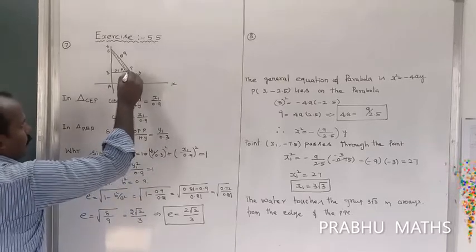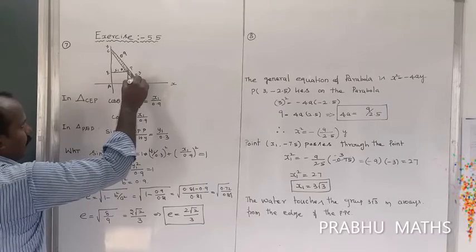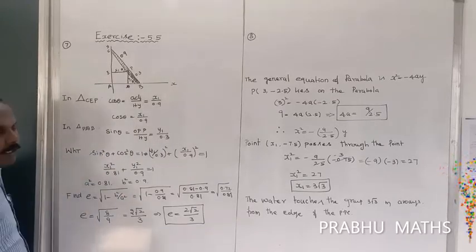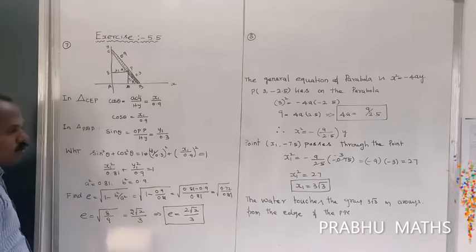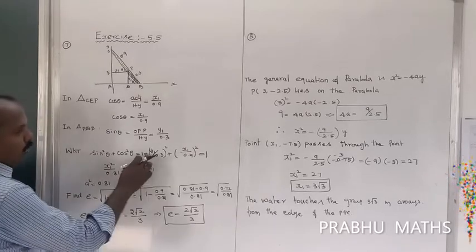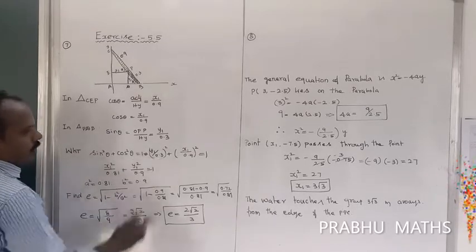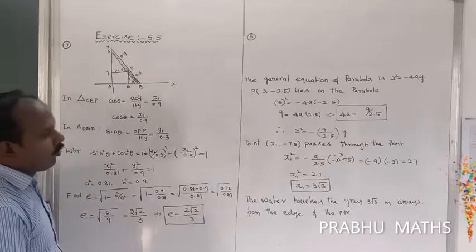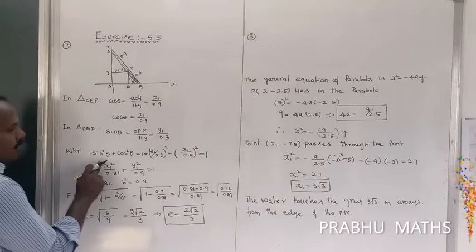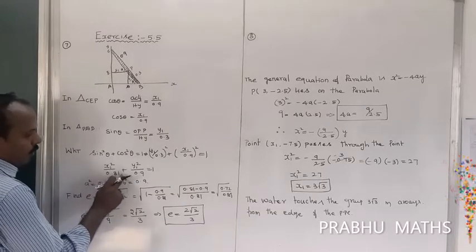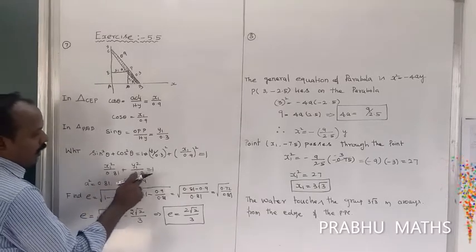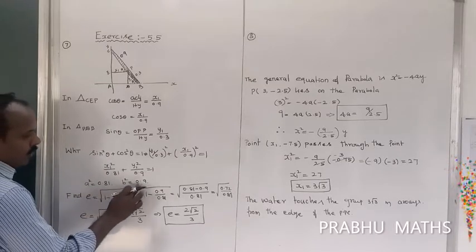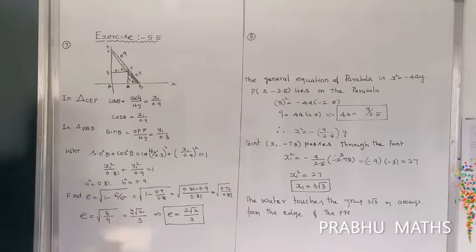Using the trigonometric identity sin²θ + cos²θ = 1, we substitute: (y1/0.3)² + (x1/0.9)² = 1. This gives x1²/0.81 + y1²/0.09 = 1. So A² = 0.81 and B² = 0.09.